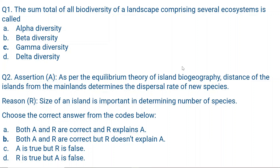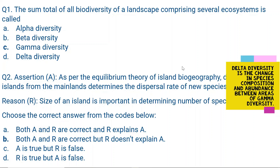Gamma diversity is the total biodiversity of a landscape, as I have told you. And delta diversity — delta is a calculus term like delta p by delta t. Change in biodiversity over time is called delta diversity.